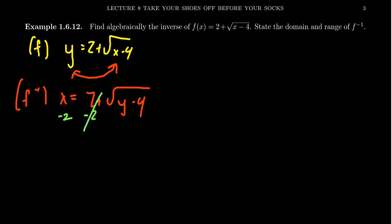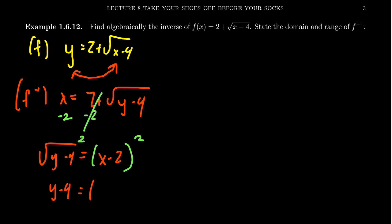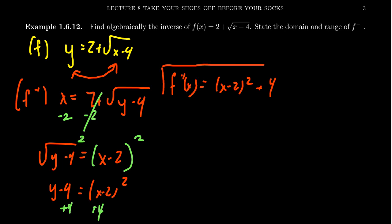Subtract 2 from both sides so the 2 cancels on the left-hand side, giving us the square root of y minus 4 equals x minus 2. Next, square both sides — make sure that you're squaring the entire expression x minus 2. This gives us y minus 4 equals x minus 2 squared. Then add 4 to both sides, giving us y equals x minus 2 squared plus 4. So f inverse of x equals x minus 2 squared plus 4. If we were to compose this function with f, their composition would just be x — these operations cancel each other out.